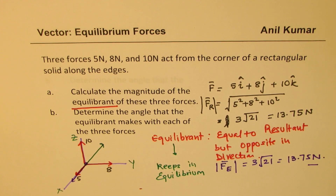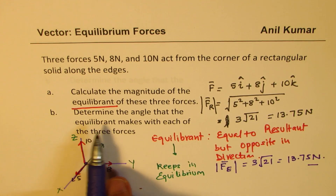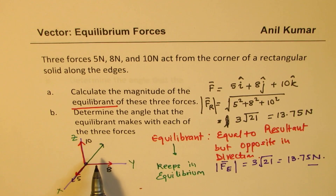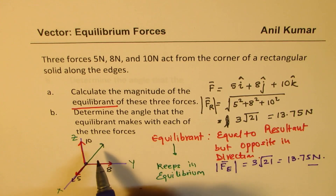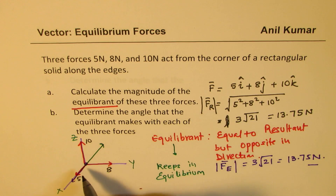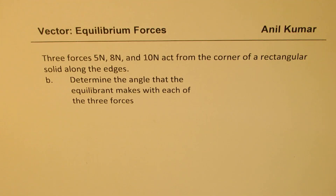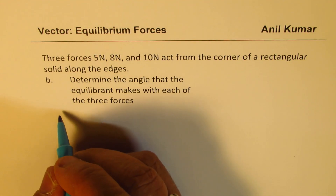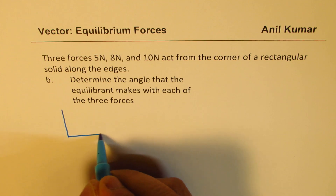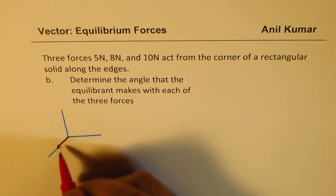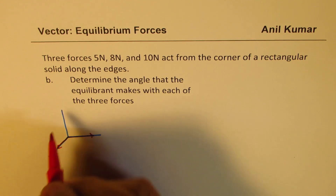Part b asks us to determine the angle the equilibrant makes with each of the three forces. We will find the angles for the resultant force first, then 180 minus each of those will give the equilibrant angles. Let's work on a new page. We have our three forces — 5, 8, and 10 Newtons — and the equilibrant acts directly opposite to the resultant with the same magnitude.